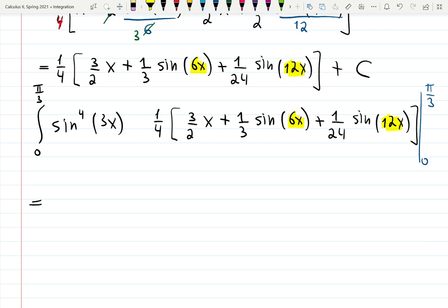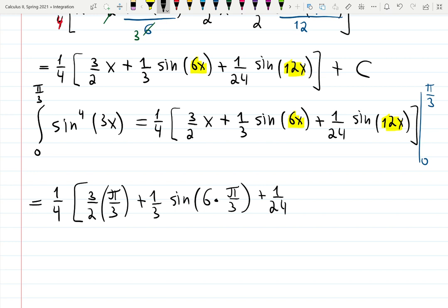Start plugging in. That's why I like having one quarter outside because then it will not mess up the calculation. So we'll have three halves times π over 3, plus one third sin(6 times π over 3), plus 1 over 24 sin(12 times π over 3). Minus one quarter - and zero everywhere, because sine of zero even if it's multiplied by 6 or by 12 is zero, and there's also x there. Let's see what kind of angles do we have.